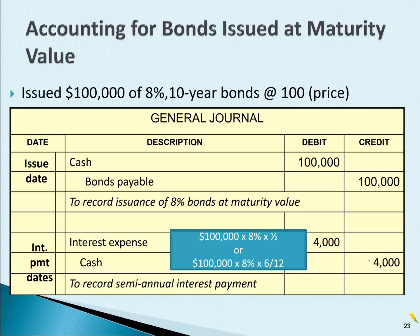So every 6 months, the company who issued these bonds will be recording this journal entry — recording interest expense and then paying out the $4,000 of cash to all the bondholders.